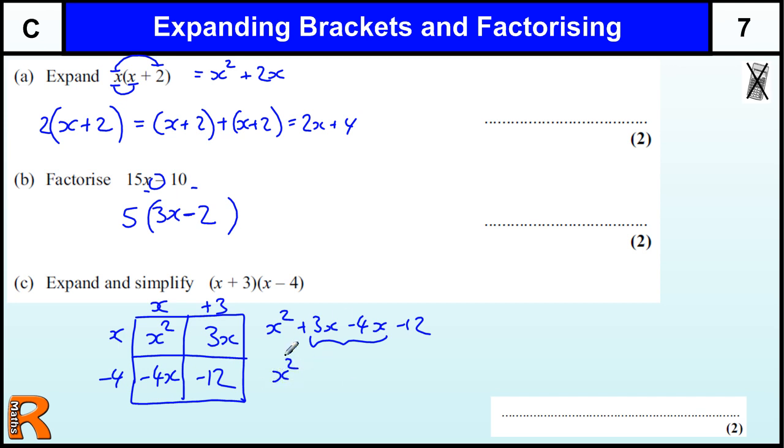You've got to be careful not to think the x squared adds on to these x's, or to do too much simplifying. It's just these two in the middle that go together. So we've got 3x minus 4x, which is minus 1x, or minus x written correctly, and the minus 12 on the end.